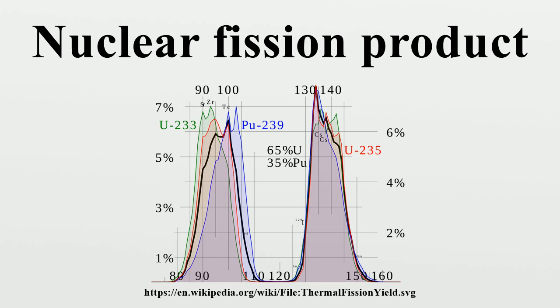The buildup of the fission product poisons is a key factor in determining the maximum duration a given fuel element can be kept within the reactor. The decay of short-lived fission products also provide a source of heat within the fuel that continues even after the reactor has been shut down and the fission reactions stopped. It is this decay heat that sets the requirements for cooling of a reactor after shutdown. If the fuel cladding around the fuel develops holes, then fission products can leak into the primary coolant.